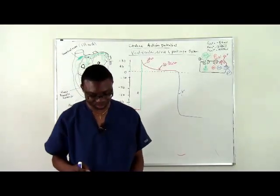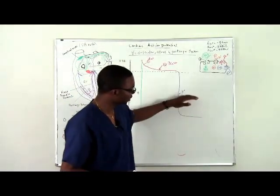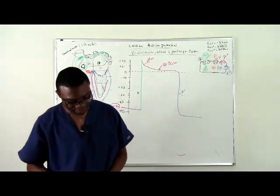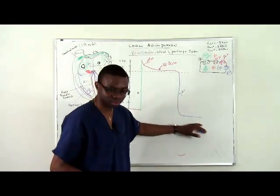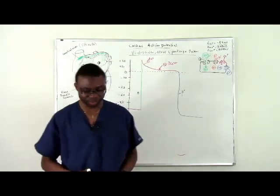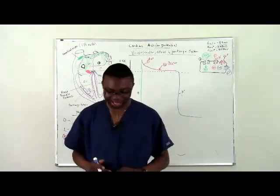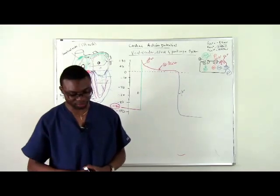As we approach repolarization due to potassium outflow, we eventually return to the resting membrane potential of the cell. This is the period where the inward and outward currents of potassium are equal.